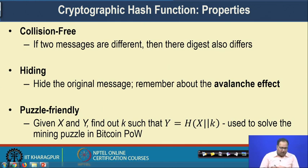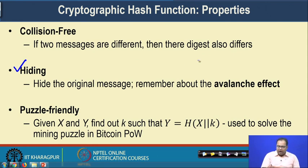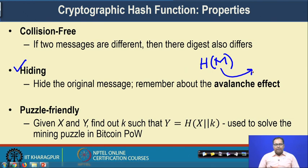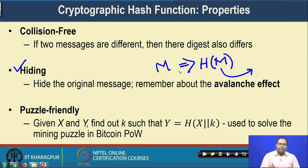The second important property is hiding. This kind of hash function hides the original message behind the message digest. Whenever you are transferring H(M), it is very difficult to guess the inherent message M. Given M, you can efficiently compute H(M), but given H(M), there is no efficient algorithm that can compute M. That is why we call this kind of hash function a one-way function.